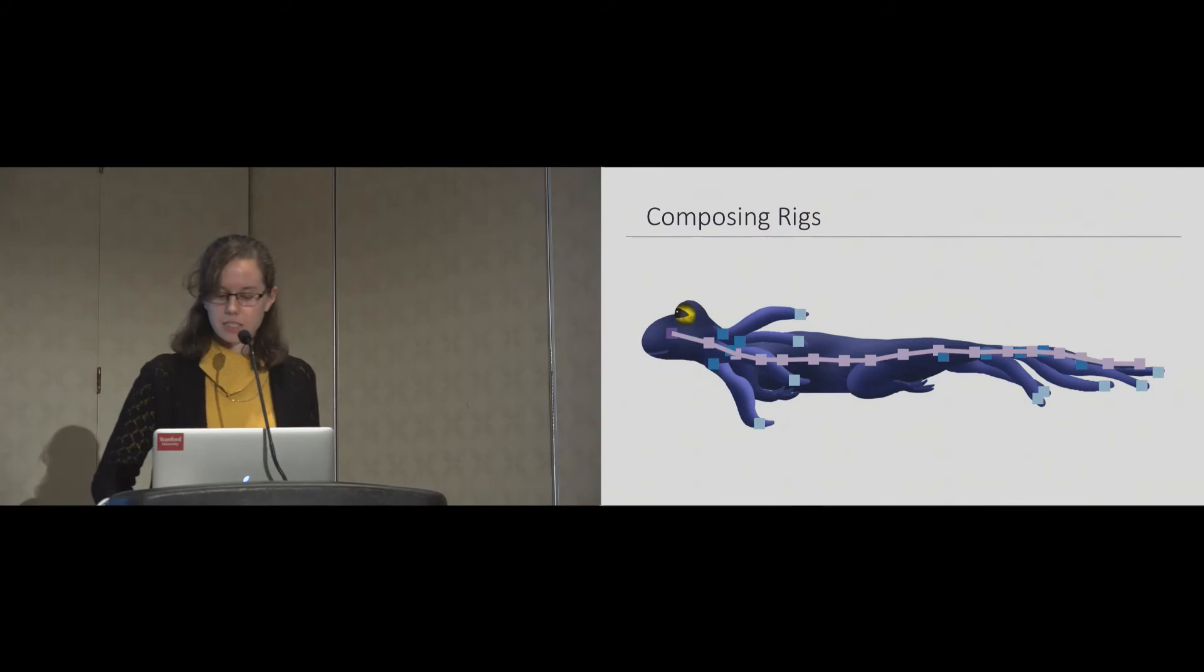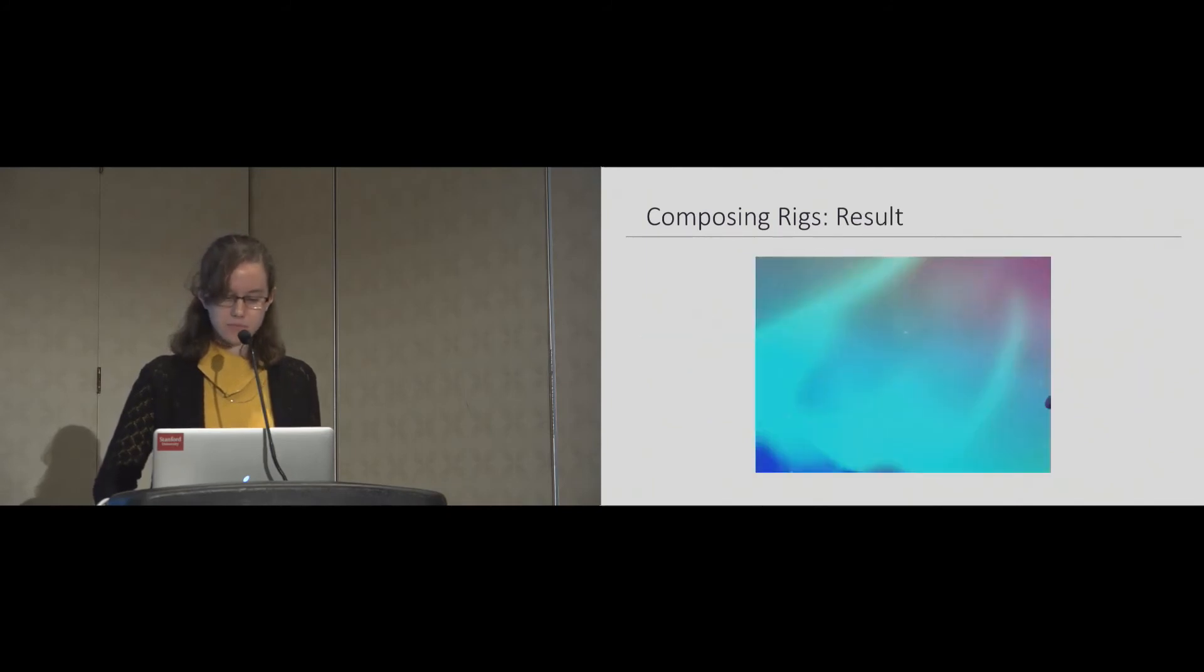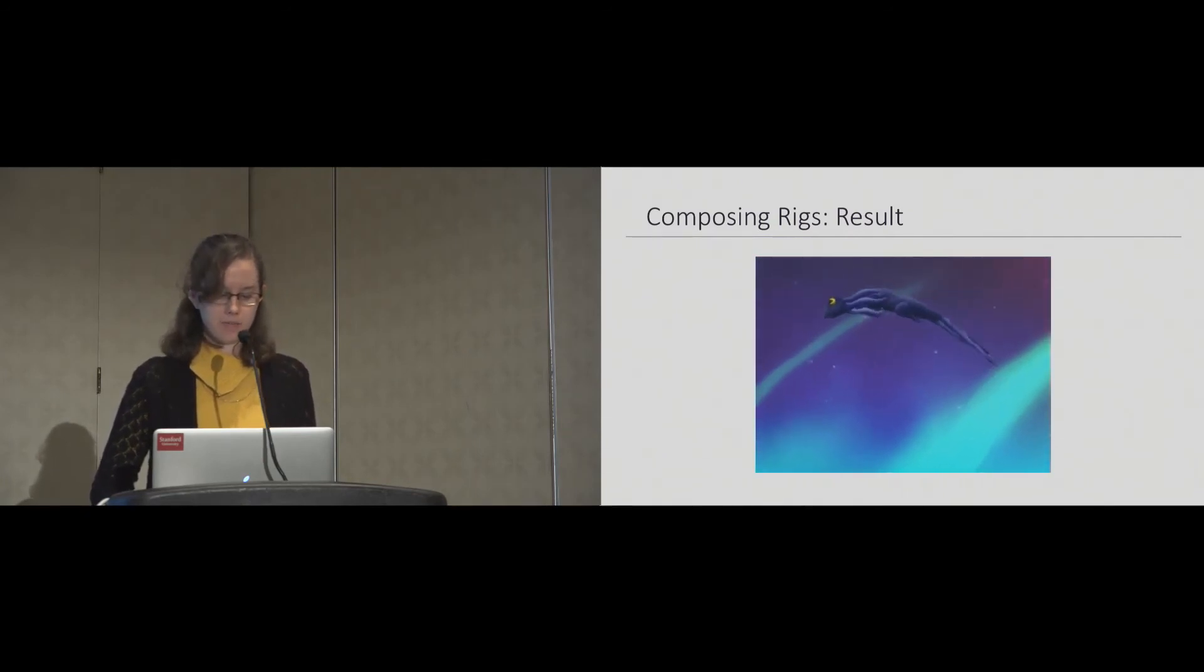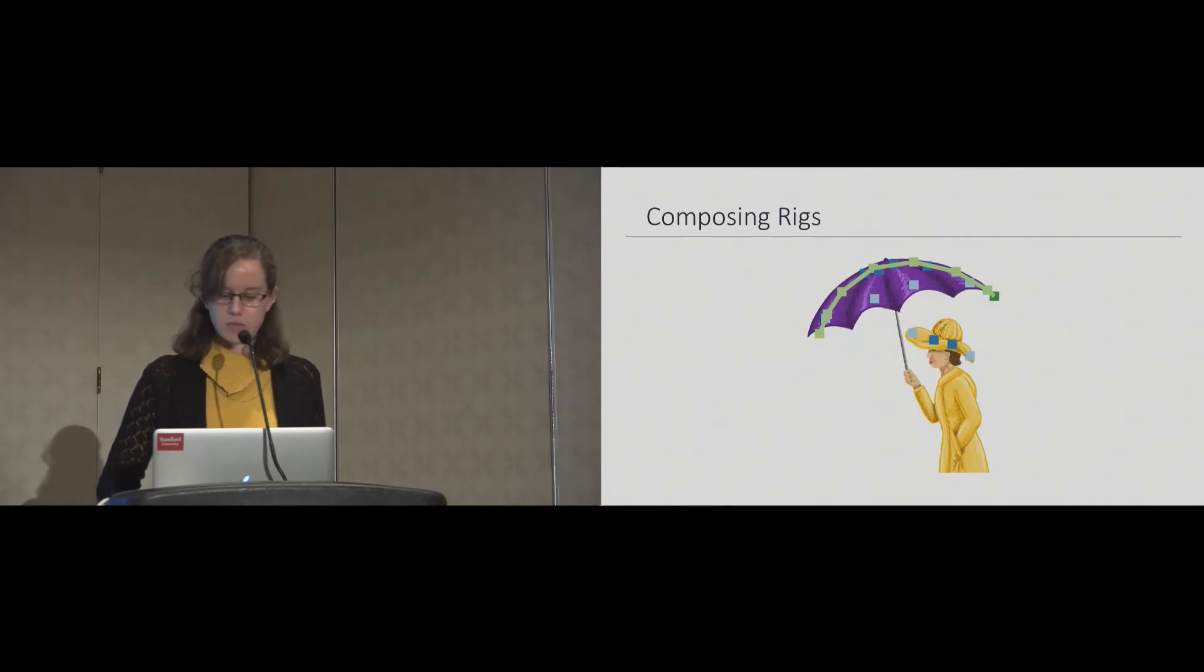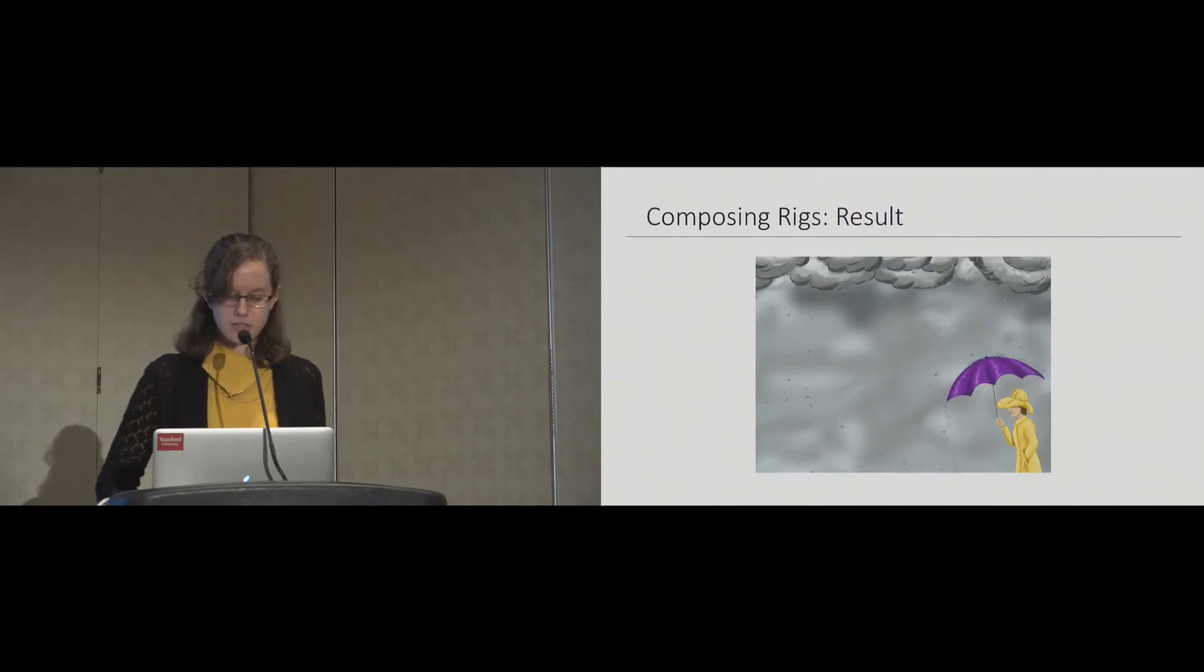This dragon has a follow rig in purple applied to the main skeleton and a rest pose rig in blue applied to his mane and tail. Our rigs add trailing motion to the dragon's body and jiggling to the dragon's mane and tail. Here we apply a collision and rest pose rig to the umbrella and add a rest pose rig to the girl's hat. In our result, the umbrella bounces as the rain falls on it and it keeps the girl dry. Her hat also jiggles slightly as she walks.